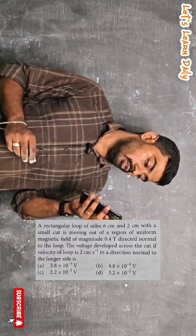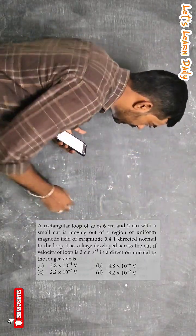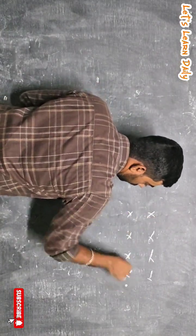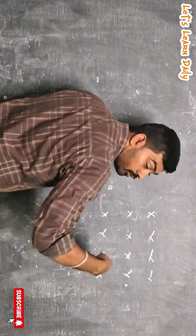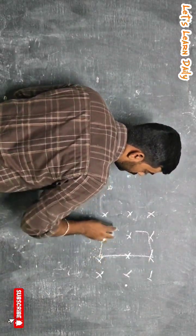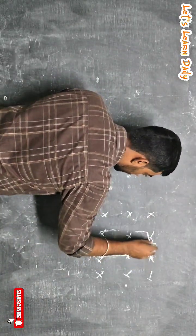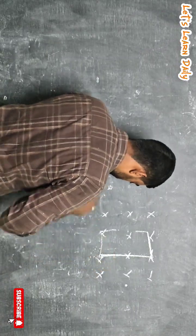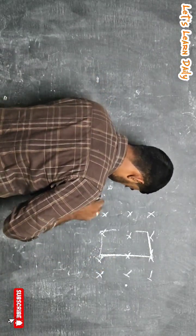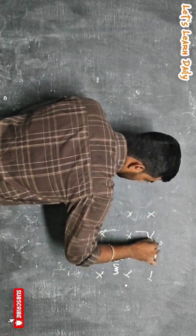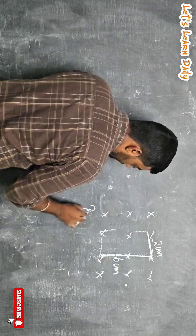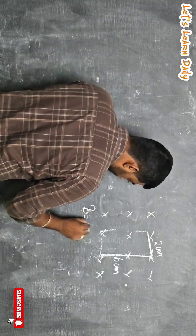So consider a uniform magnetic field, so it is going towards the paper. We call a loop which is lying here. The value is 6 centimeter and the value is 2 centimeter.